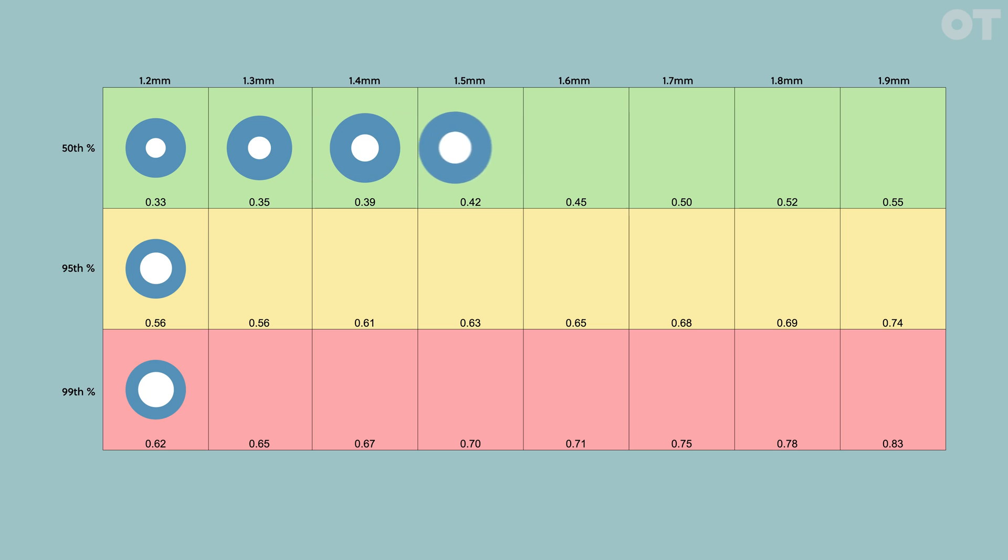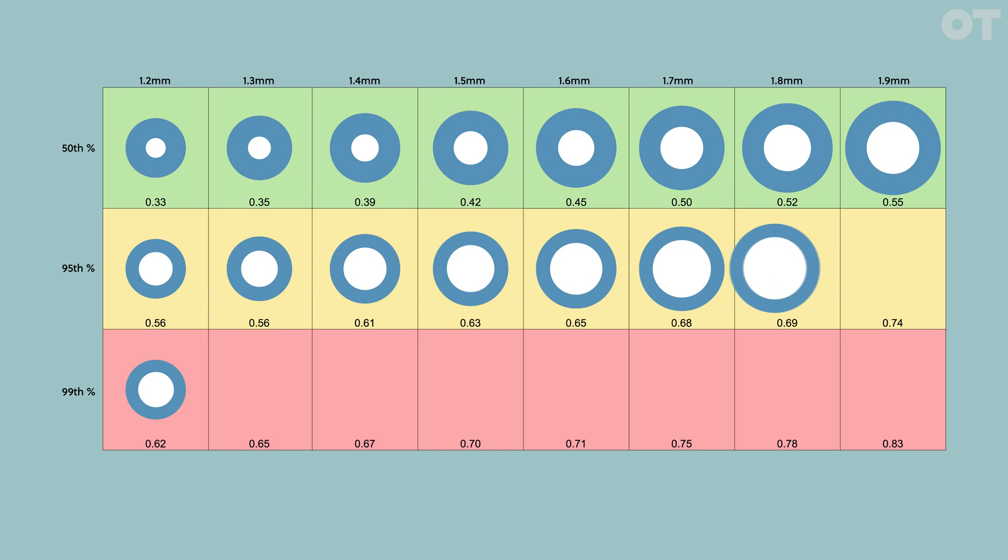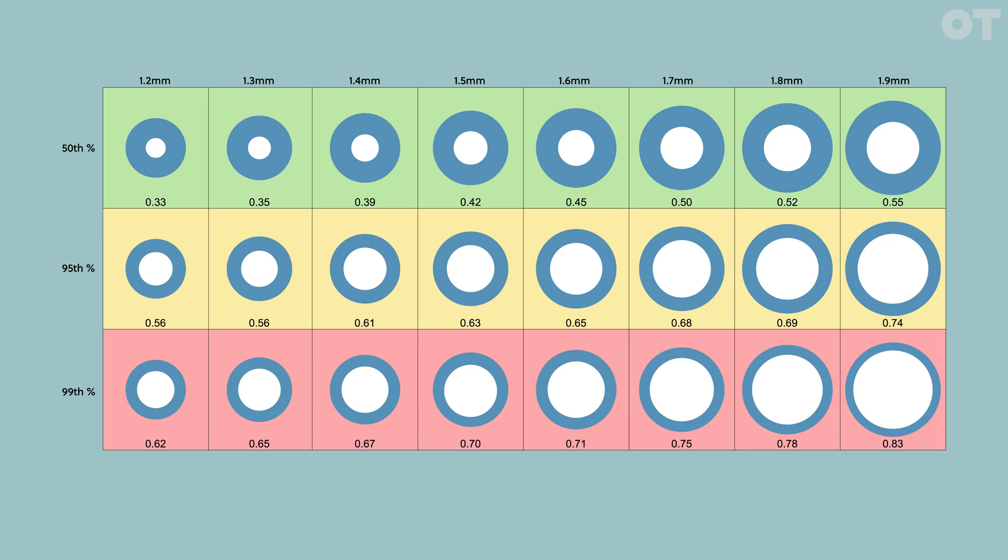You can see it uses a traffic light system. It shows you the spread of CD ratios found in various optic nerve sizes in non-glaucomatous eyes. The CD ratios in the red zone are the 99th percentile. Only 1% of non-glaucomatous eyes have a CD ratio of this size.